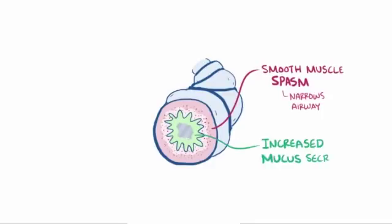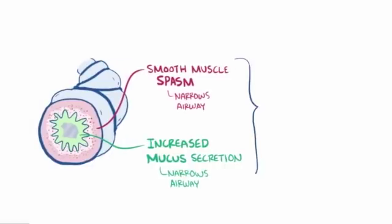And second, there's increased mucus secretion into those narrow airways, narrowing them even more, which when these are combined makes it really hard to breathe, and this is why asthma is considered a type of obstructive pulmonary disease.